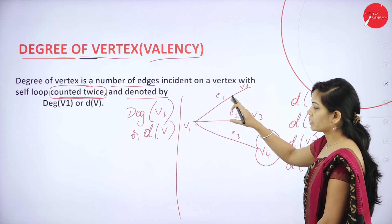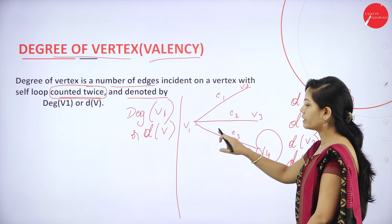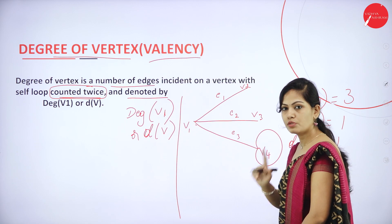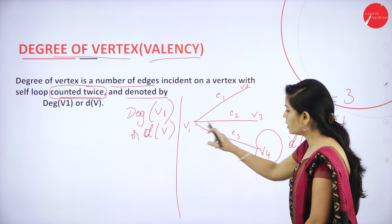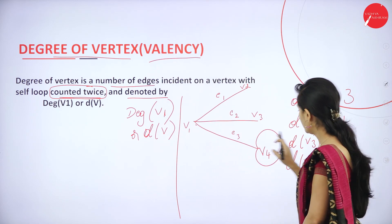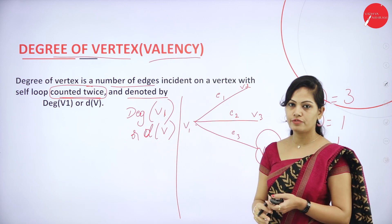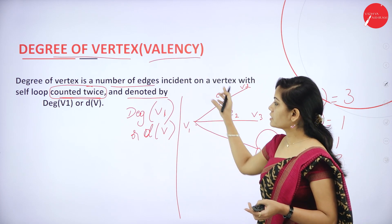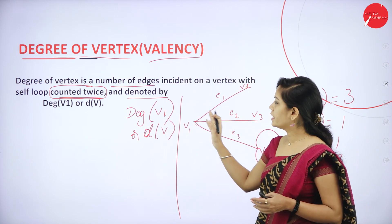To repeat: in this graph we have V1 connected to V2, V3, and V4 — degree 3. V2 is connected to V1 — degree 1. V3 is connected to V1 — degree 1. V4 is connected to V1 with a self-loop — self-loop counted twice, so 2 plus 1 equals 3. The degree sequence is 3, 1, 1, 3. Degree of vertex is also known as valency, and self-loops are always counted twice.